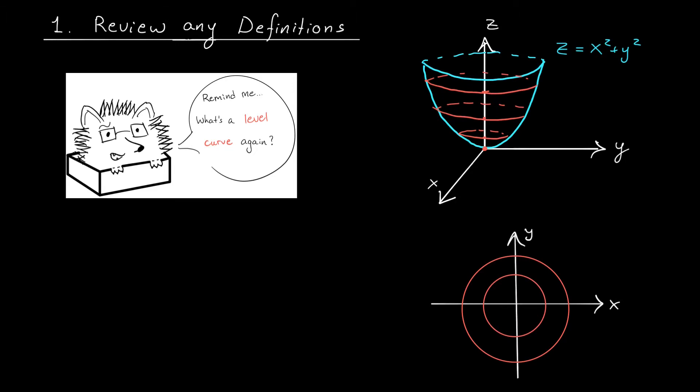Now in this problem, we're not actually given the graph of the 3D function, we're just given the equation. Fortunately, however, we often don't need the graph to find the level curves. We can do all this algebraically. So starting with the equation z equals x squared plus y squared, and setting z equal to k, we get the equation x squared plus y squared equals k.